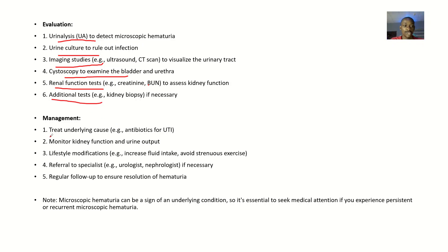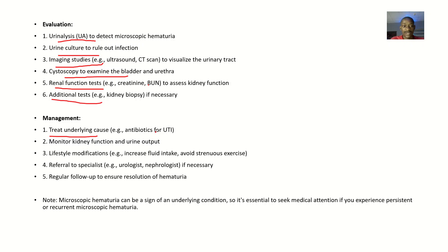For management, most of the time microscopic hematuria comes with an underlying cause — another disease condition causing it — so you try to tackle that. Treat the underlying cause; for example, administer antibiotics if you suspect a urinary tract infection. You should also monitor kidney function and urine output.